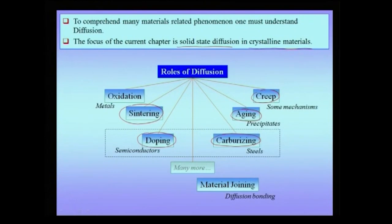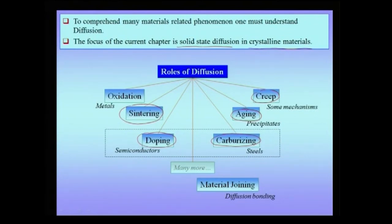Suppose you are talking about an oxidation process occurring in metals on the surface, a powder metallurgical process where you start with a powder and sinter it to make a compact, doping of semiconductors where a small quantity of a p-type dopant is introduced into silicon, surface hardening of steels using carburizing, how precipitates in a material age or coarsen with time, or damage mechanisms of creep where the material is exposed to high temperatures for a long time. The roles listed here — oxidation of metals, sintering, doping of semiconductors, surface carburizing of steel, aging of precipitates, and creep of metals — are just a few examples. One other example would be diffusion bonding, when two materials are joined using the process of diffusion.